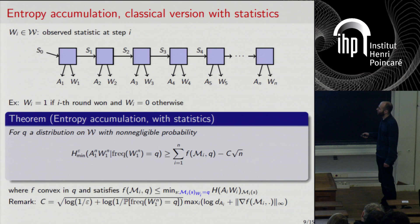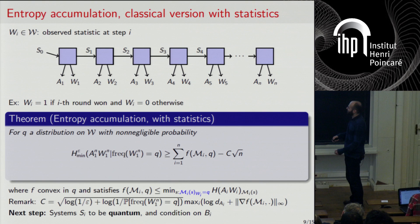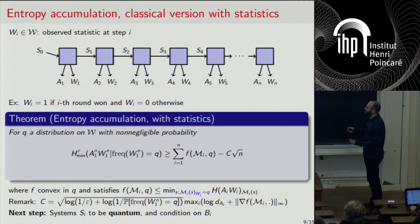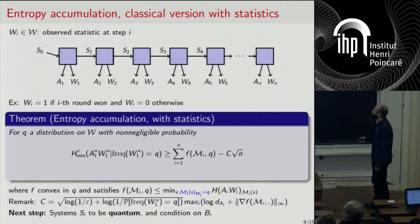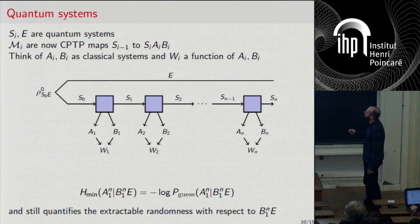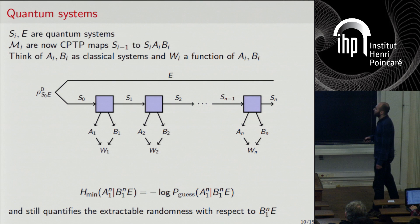For the next step, we want the systems S_i to be quantum — the internal memory should be quantum. Additionally, we allow the device at each step to output a classical register B_i that the adversary can also see. The systems A_i and B_i can be classical. The W_i statistics are assumed to be a deterministic function of A_i and B_i, so given A_i and B_i you can determine whether you won or lost. If you're thinking of playing CHSH sequentially, think of B_i as the inputs and A_i as the outputs of the game.